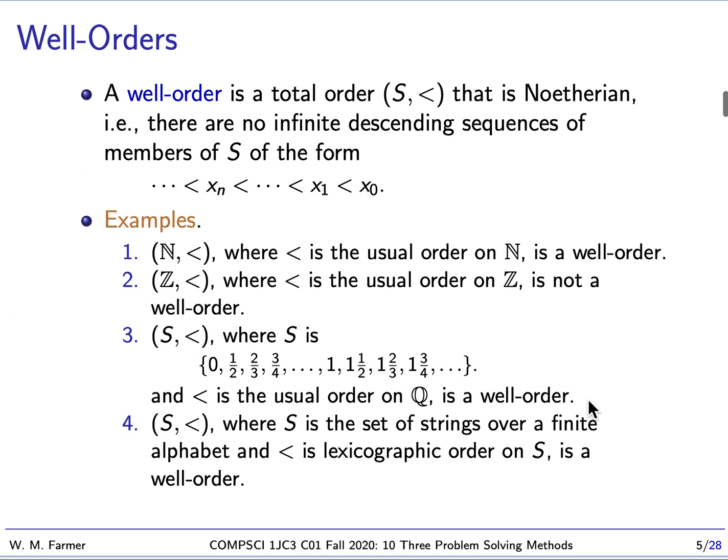Let's talk about what a well-order is. A well-order is a total order (S, <) that is Noetherian. A total order means we have a set of elements S that can be lined up in a linear fashion - we can put all our points on a line. If we're at C, everything to the right is bigger than C, everything to the left of C is smaller than C. This is what we call a total order, sometimes called a linear order. A well-order is a total order that's Noetherian.